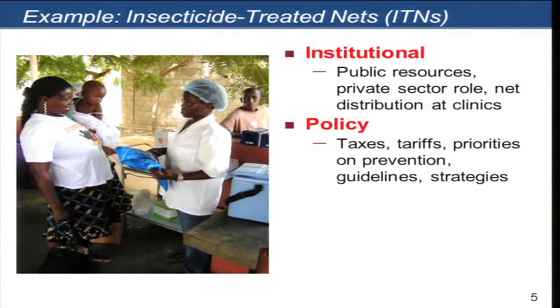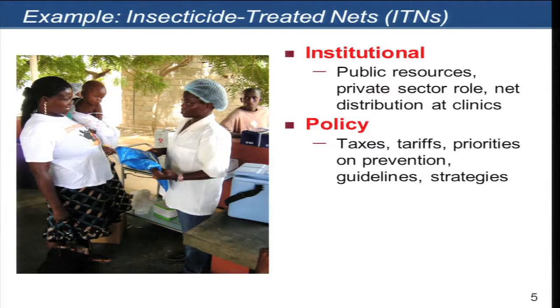Some policy issues are extremely important. The community may want nets and be willing to use them, but if there are taxes on importing the nets or tariffs, or lack of guidelines and strategy documents to encourage distribution and use, no matter how much the community, the family, or the individual wants these nets, if policy does not enable their easy distribution, there will be challenges. So we need to look at the behavior of policy makers, program managers, community leaders, family members, and the individual who ultimately will sleep under that net.